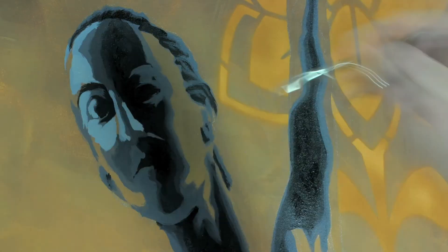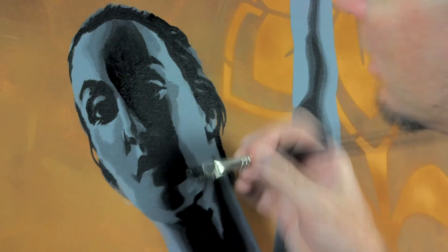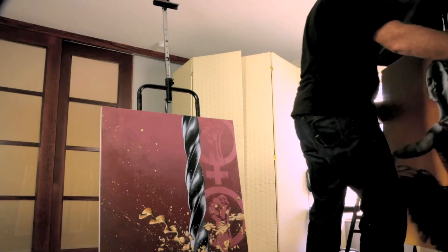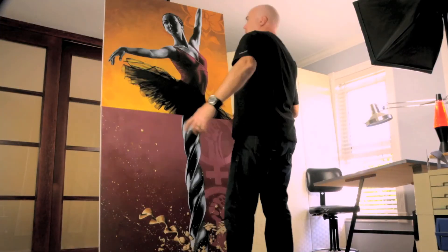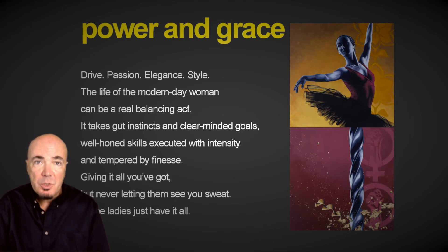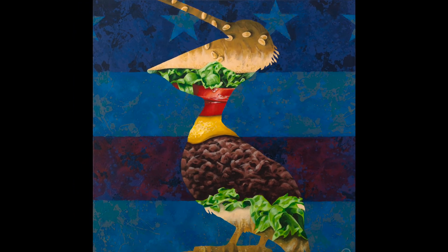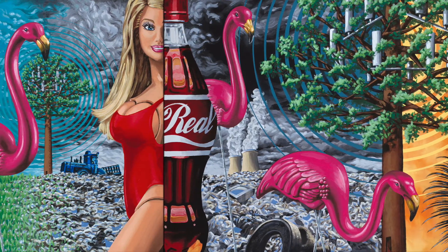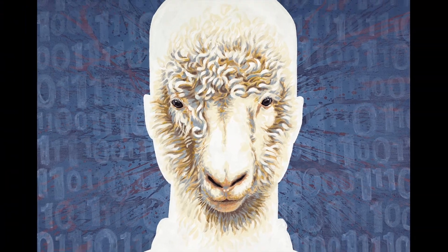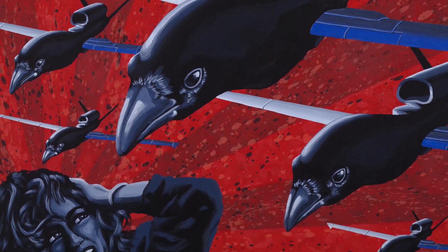My rendering technique requires building up many layers of tonality, starting with the darkest shadows and gradually creating dimension by adding a range of mid-tones, then highlights. This piece, Power and Grace, is an homage to the modern woman. In the final diptych, a ballet dancer represents both femininity and inner strength, while a power drill symbolizes her intensity and endurance. In building a body of work, I've explored a range of social issues, from corporate greed to environmentalism to personal empowerment, and most often, modern technology and its effects on human behavior.